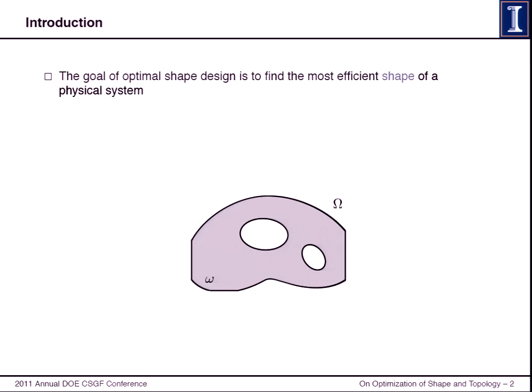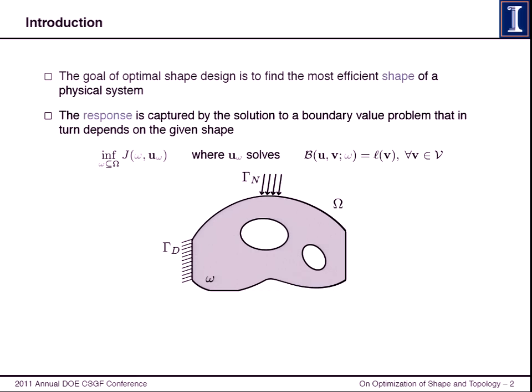As the name suggests, we're dealing with optimization problems in which the unknown is the shape or geometry of a physical system. The objective function not only depends on the shape explicitly, but also depends on the physical response of the system that has the given shape. That's typically characterized by the solution to a boundary value problem that in turn depends on your shape, in this case shown little omega.